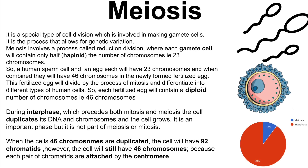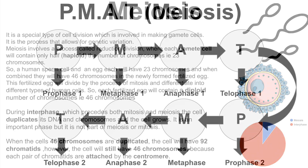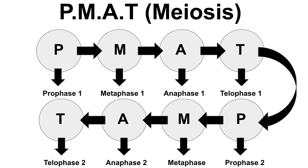Chromosomes are made of DNA and protein. In mitosis, the cells divide one time, which means that they are doing PMAT one time. Remember the acronym PMAT.